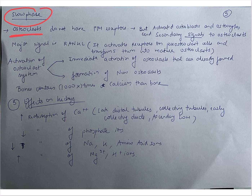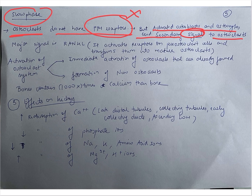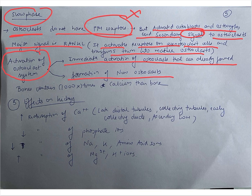In the slow phase, osteoclasts do not have PTH receptors. Instead, activated osteoblasts and osteocytes send secondary signals to the osteoclasts. The major signal is RANKL, which activates receptors on pre-osteoclast cells and transforms them into mature osteoclasts. When osteoclast activation occurs, two things happen: immediate activation of already-formed osteoclasts, and formation of new osteoclasts. Bone contains a thousand times more calcium than ECF.